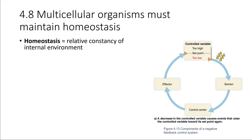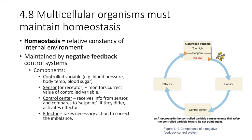Homeostasis is primarily maintained through what are called negative feedback loops, or negative feedback control systems. Negative feedback control systems have four major components. The first is some type of controlled variable — this could be something like the temperature of the body, blood sugar levels, or blood pressure. These are all things that need to be maintained in a fairly constant state, and we don't want huge fluctuations in any of these.